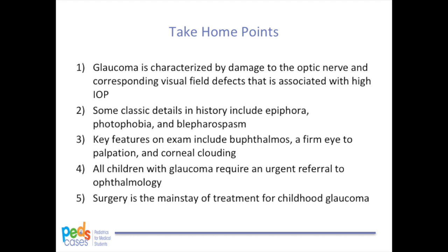The take-home points of this podcast are: 1. Glaucoma is characterized by damage to the optic nerve and corresponding visual field defects, often associated with high IOP. 2. Classic history details include epiphora, photophobia, and blepharospasm. 3. Key features on exam include buphthalmos, firm eye to palpation, and corneal clouding. 4. All children with glaucoma require an urgent referral to ophthalmology. And 5. Surgery is the mainstay of treatment for childhood glaucoma.